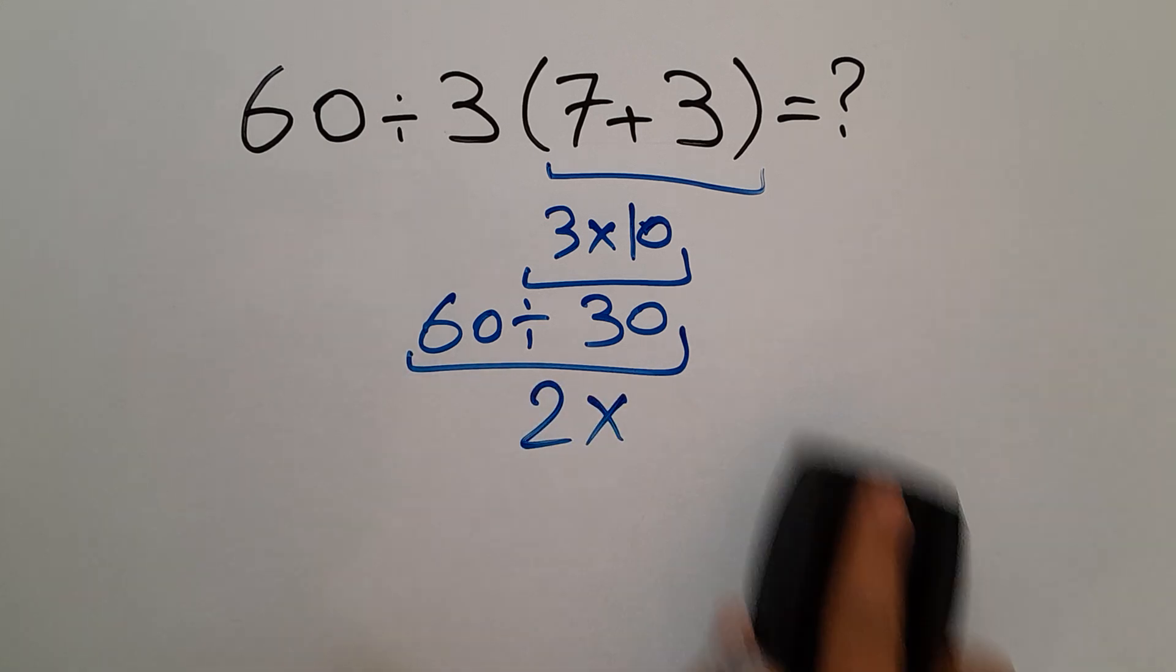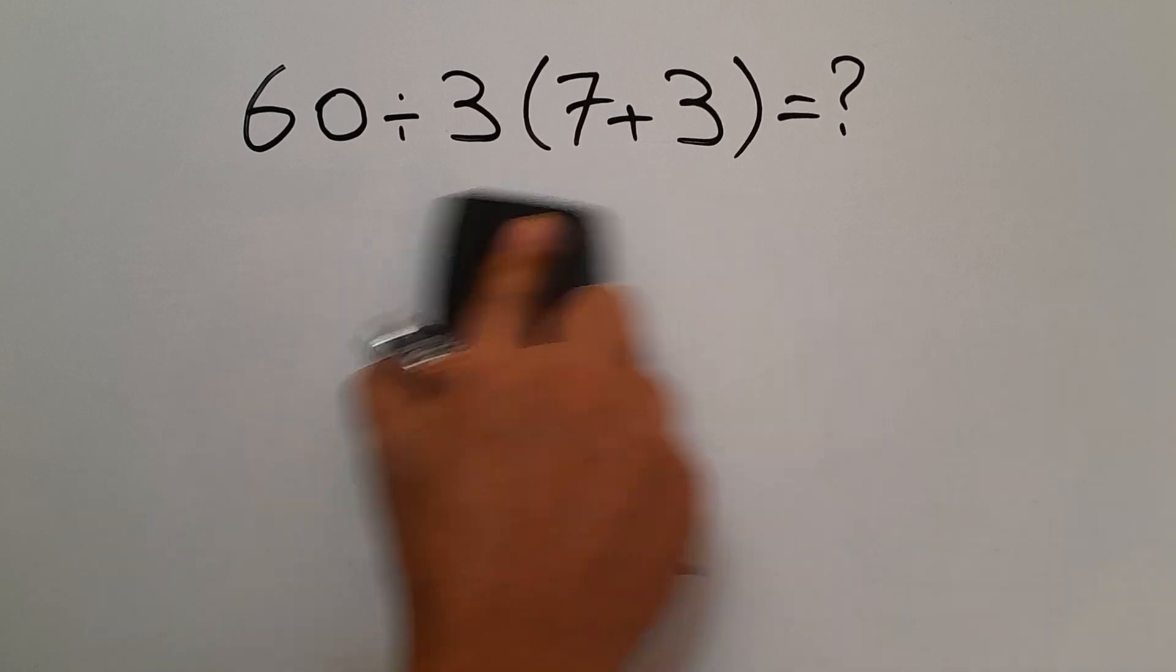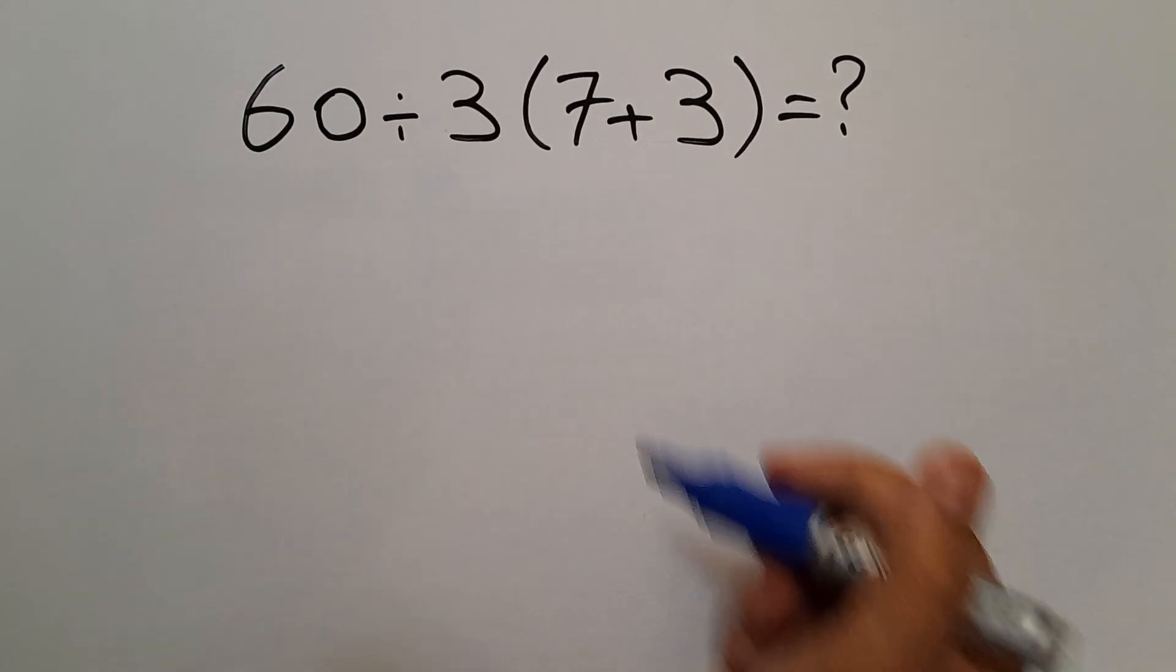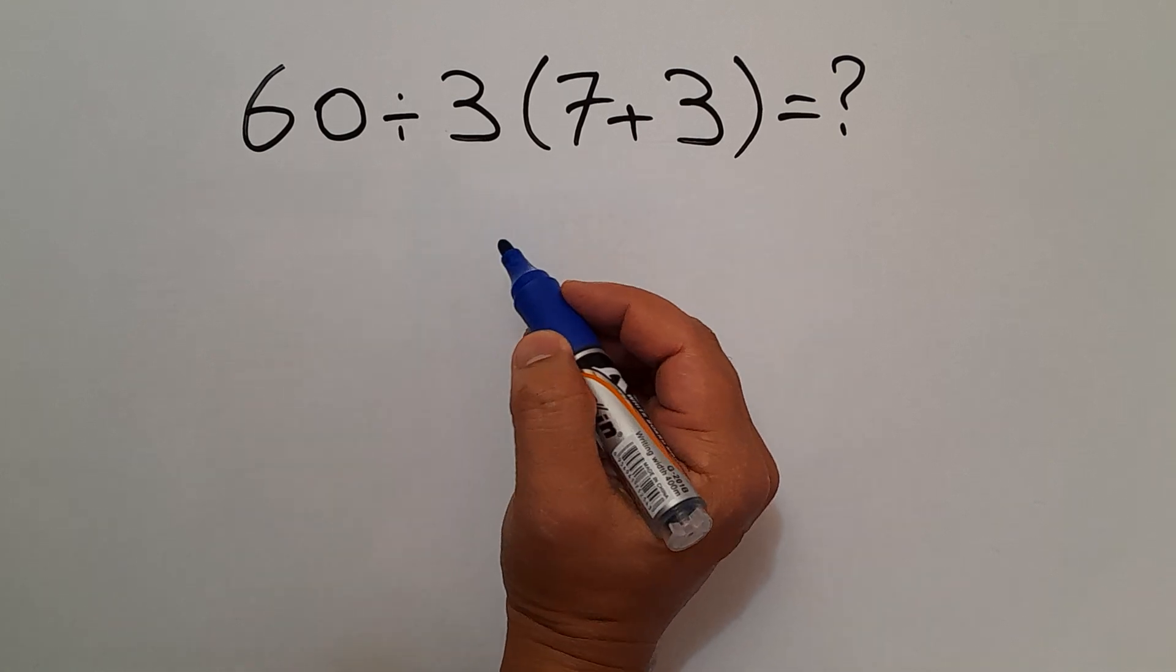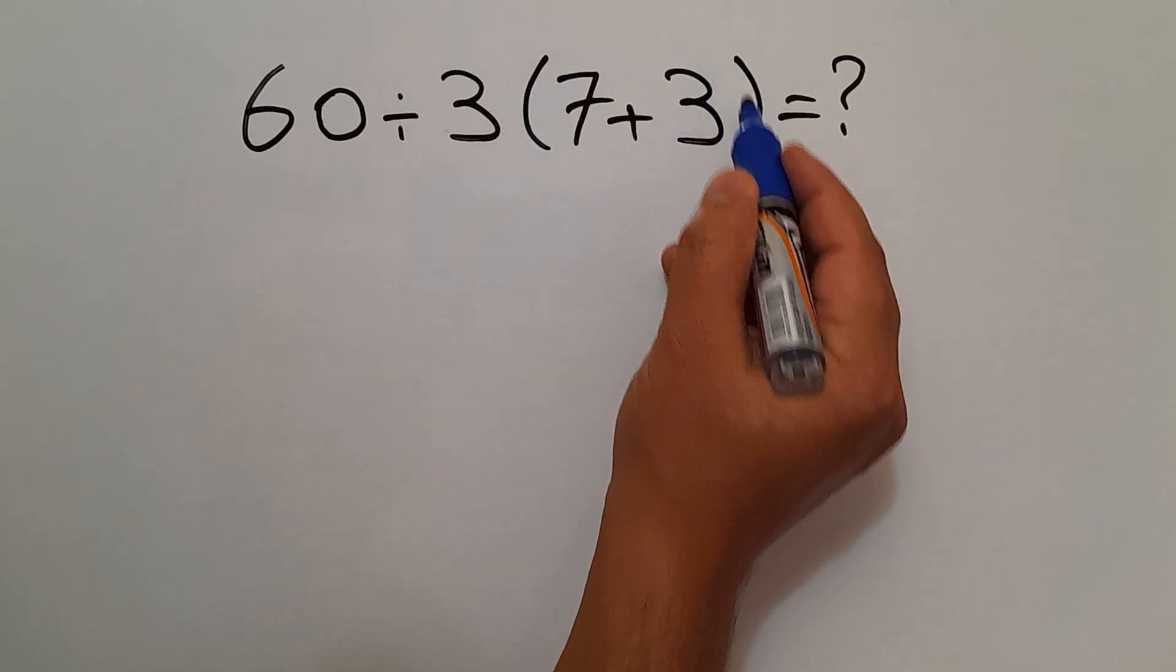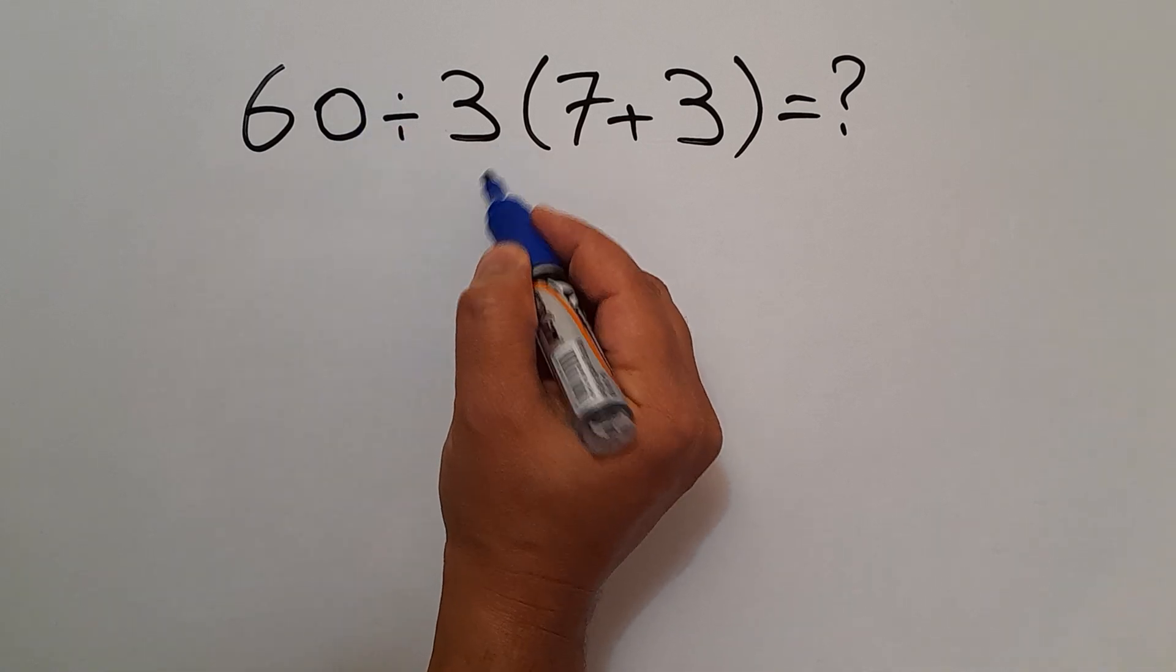But this answer is not correct. Because according to the order of operations which is PEMDAS, the parentheses has higher priority than other operations. So first we have to handle these parentheses, then division, and finally this multiplication.